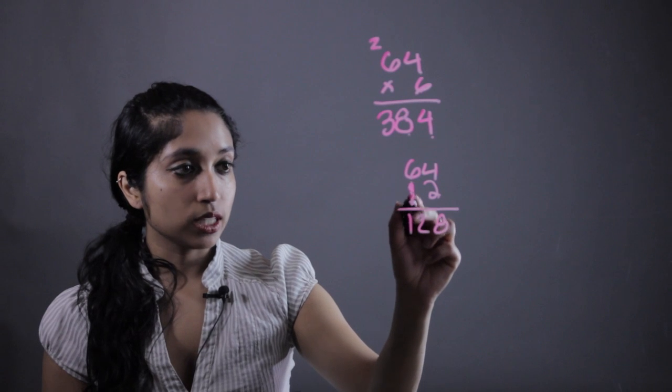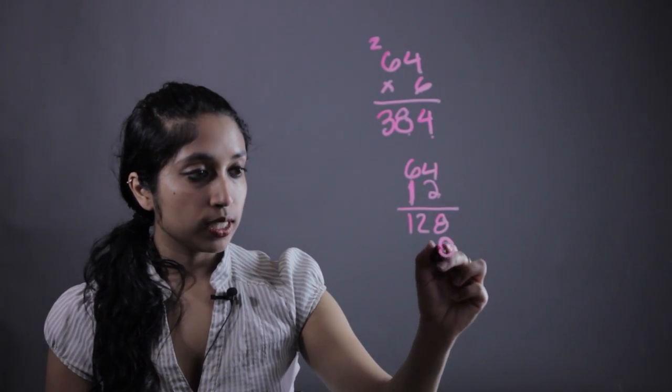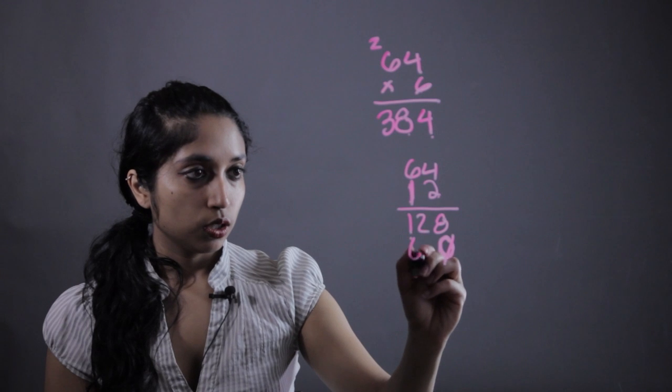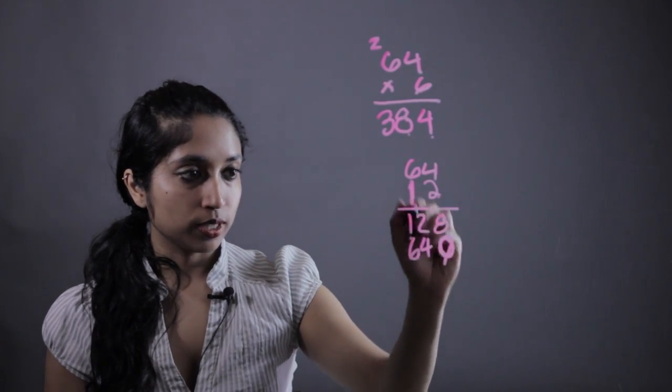And then when we go to multiply this number, you just put a 0 in here. Just put in 1, 0. And then you multiply. 1 times 4 is 4, 1 times 6 is 6.